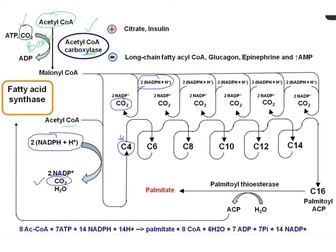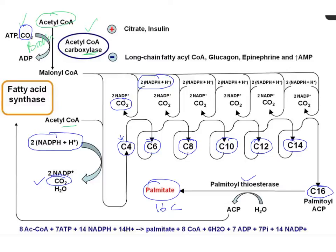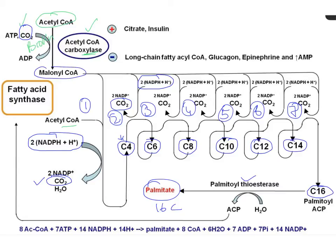After the first spiral we have a 4-carbon molecule, then 6, then 8, 10, 12, 14, and finally 16 carbons — that is palmitoyl-ACP. Palmitoyl thioesterase then cleaves it to release palmitate, the 16-carbon fatty acid. To reach 16 carbons, seven spirals occurred.